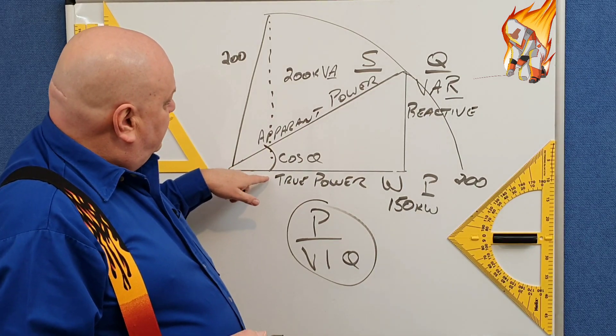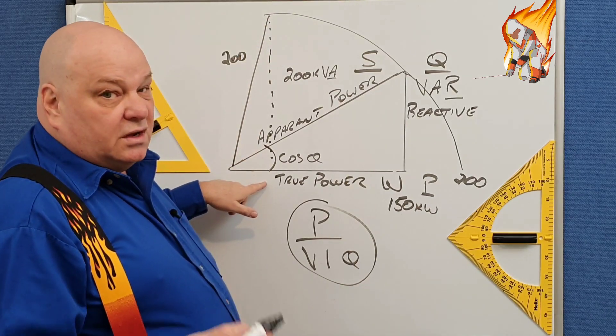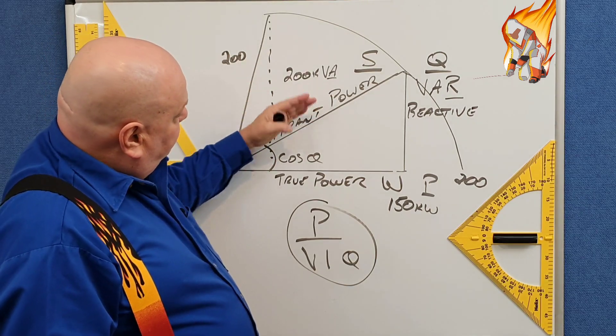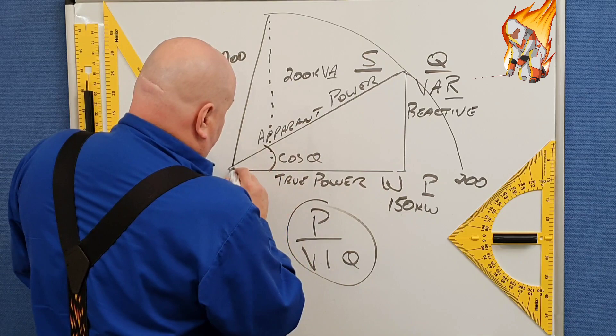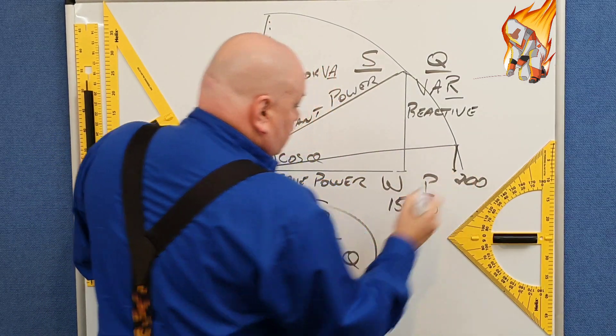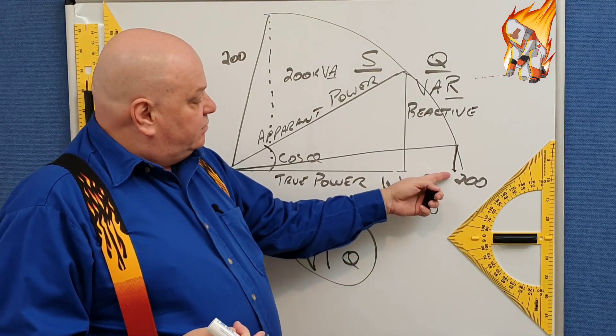So as you can imagine, 200 kVA is not going to give us very much in power. On the other hand, if we were to reduce that angle and bring it down to, say, there, we might be able to do 180, 190 kilowatts.